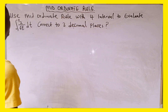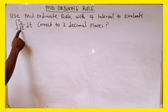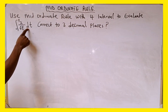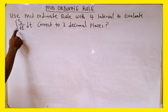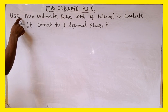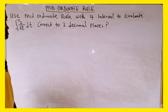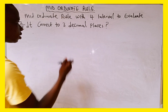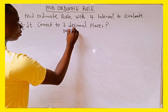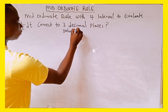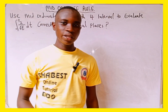The question on the board reads: use the mid-ordinate rule with four intervals to evaluate the integral of 2 over root t dt, with the limits 1 to 3, and correct our answers to three decimal places.